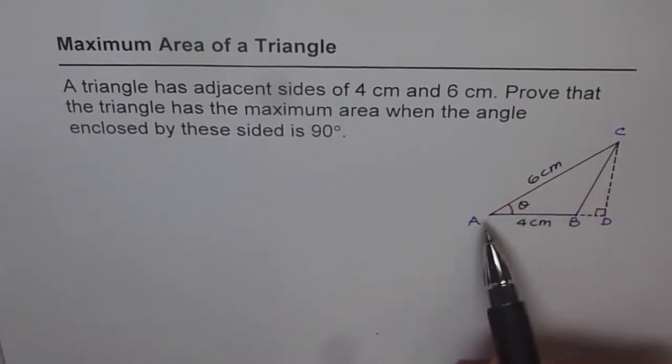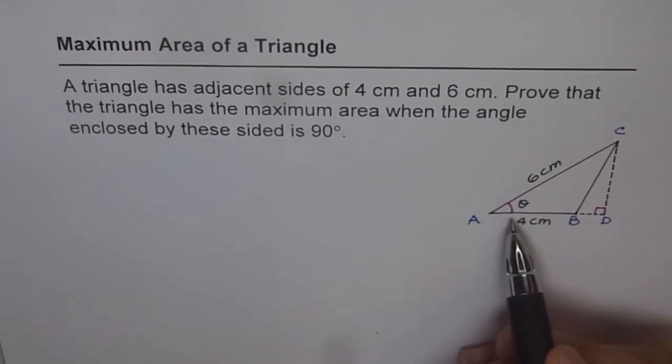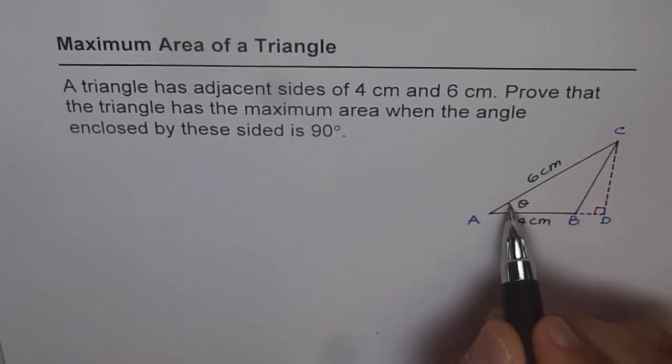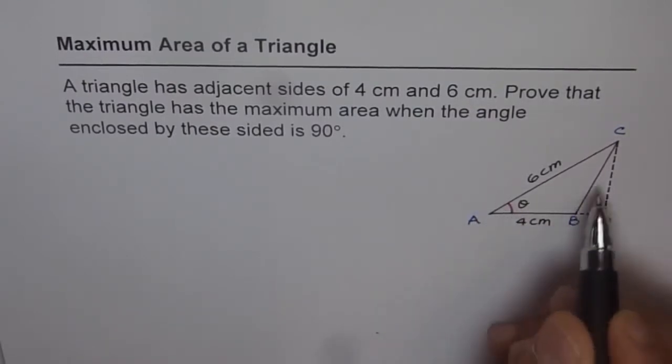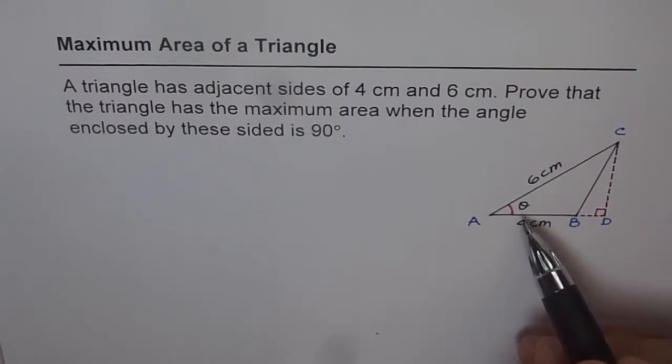So what we have here is a triangle with adjacent sides of 4 and 6 cm and the angle included is theta. Now what do we need to prove? That is when this angle is 90 degrees only then it has maximum area. That is to say that if we need to maximize the area of the triangle what should be the angle inscribed between the two sides. So let's figure it out.